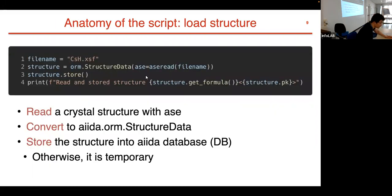The second part of the script reads an atomic structure and converts it into an AiiDA StructureData. We use ase.io.read (the read function from the ASE package), then convert it to AiiDA StructureData so that automated provenance is recorded and the structure is stored in the AiiDA database.